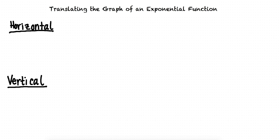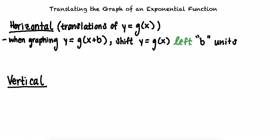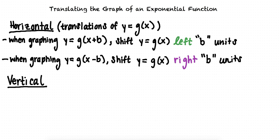The following rules cover horizontal translations of the equation y equals g of x. When graphing the equation y equals g of x plus b, we must shift the graph of y equals g of x left b units. When graphing the equation y equals g of x minus b, we must shift the graph of y equals g of x right b units.